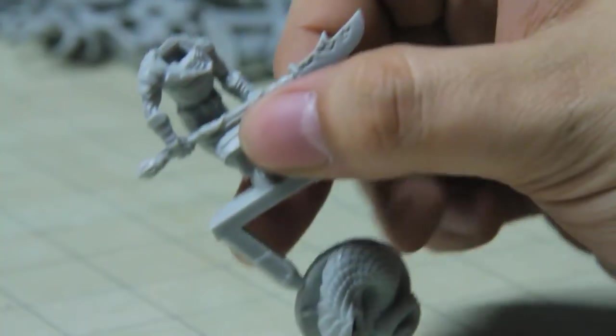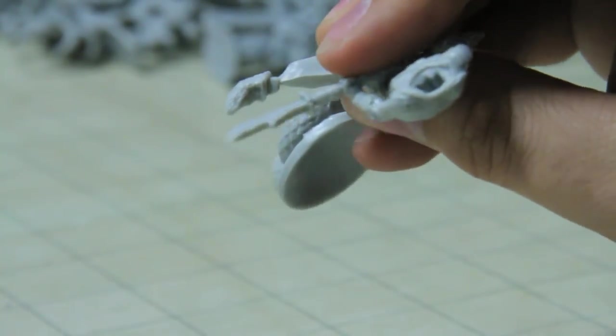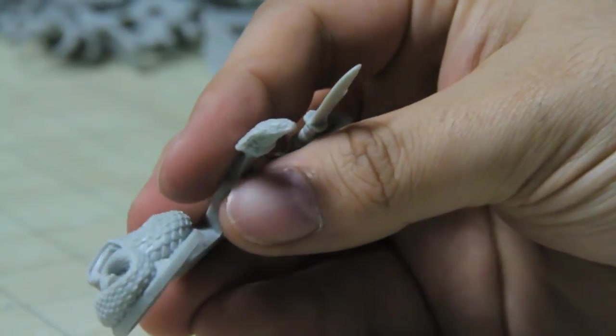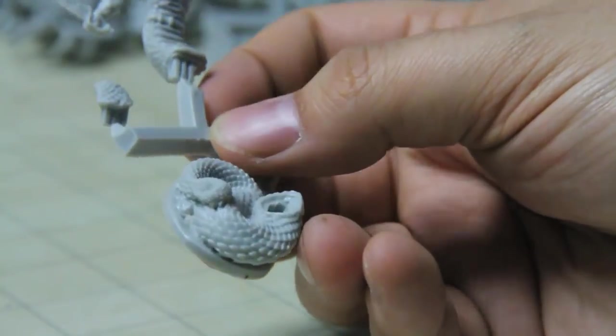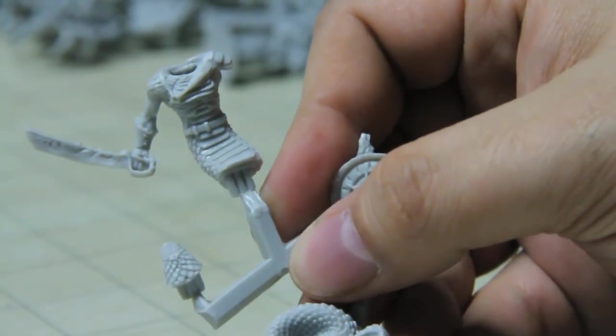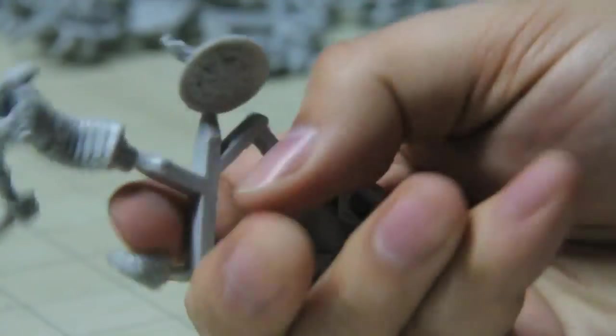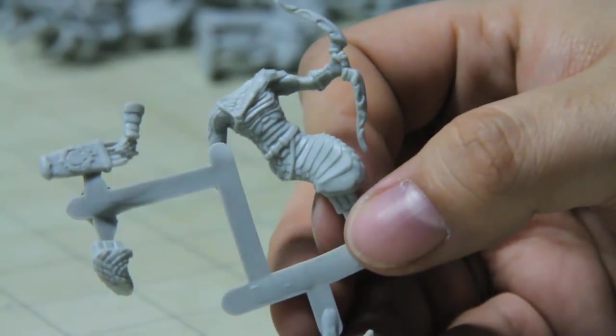And this one, of course, same. Starting with the snake body down there. Which coils up. This guy's got two swords. And looks like an armor plate on the top of its head. These actually look really cool. Just like the snake skin has a wonderful texture. I'm sure that'll take some paint wonderfully. This one's got a glaive.